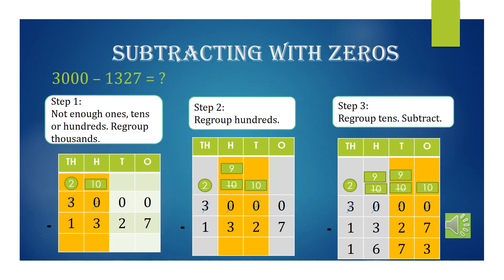Subtracting with zeros. You are going to subtract 3,000 with 1,327. As we cannot subtract 0 and 7, 0 and 2, or 0 and 3, we do not have enough ones, tens, or hundreds — so we need to regroup the thousands place.